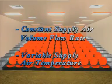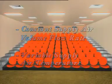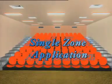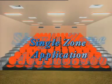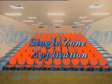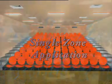This lecture theatre is an example of a single zone space. Here's how the CAV works. For a constant air volume system, or CAV in short, the supply air flow volume remains constant. This system is very ideal for single zone application, where the heat load is consistent across the entire air-conditioned space.